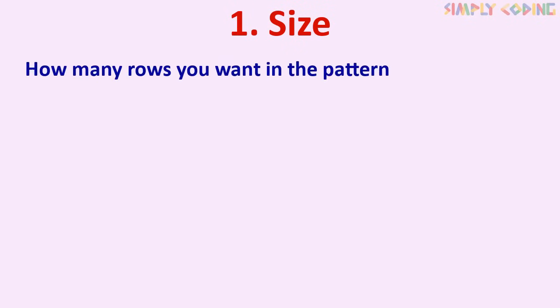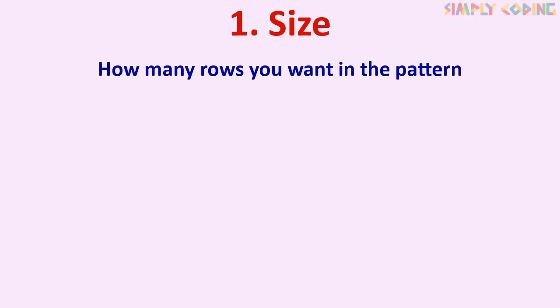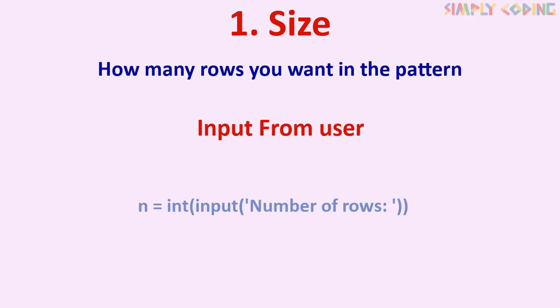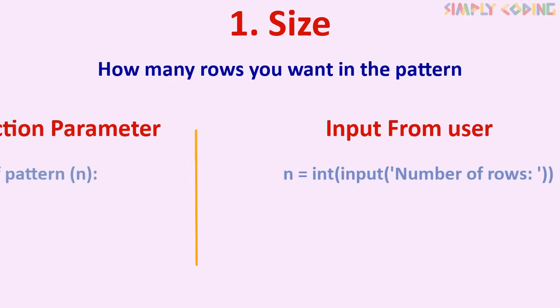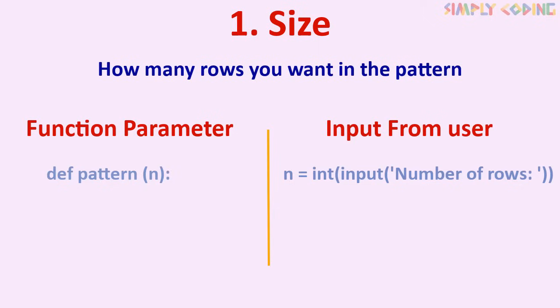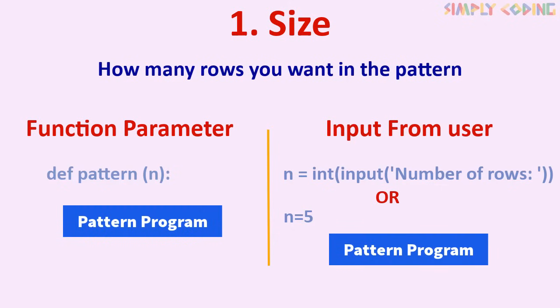Let's get started. The first thing in a pattern is the size — how big or how many rows you want in the triangle. Either you could be asked to take size from the user and use the input function, or if you are asked to write a function, n could be passed as a parameter. If you are given the size in the question itself, you can just directly assign it to a variable n. For our examples, we will consider that we have size in variable n which has value 5. We will just focus on the code to make the pattern — depending upon your question, you can either write a function or take input from user and just plug this code in.